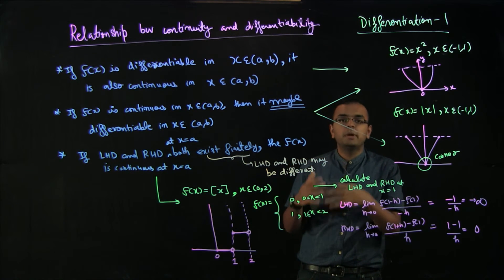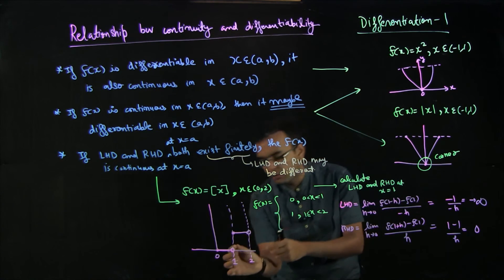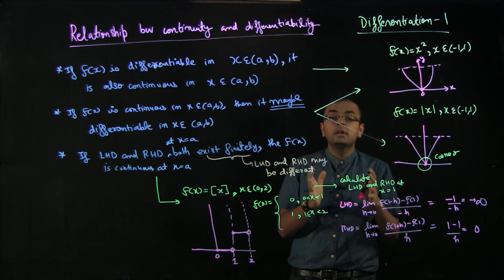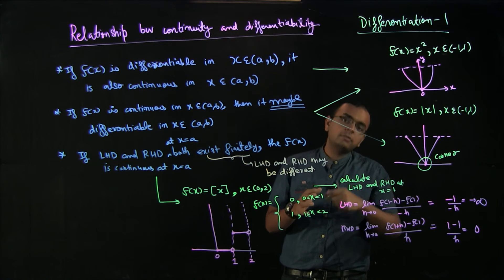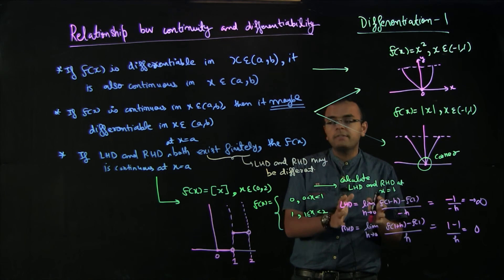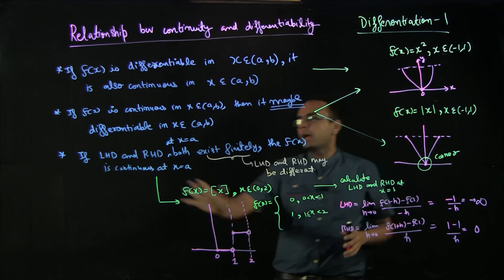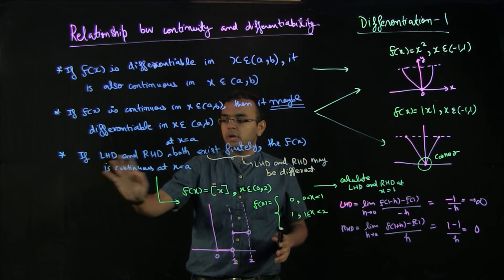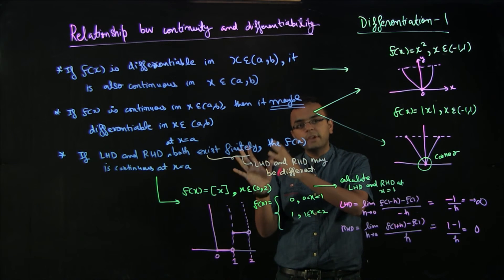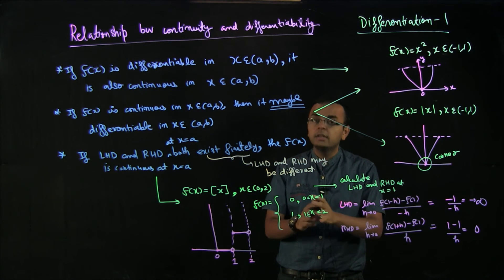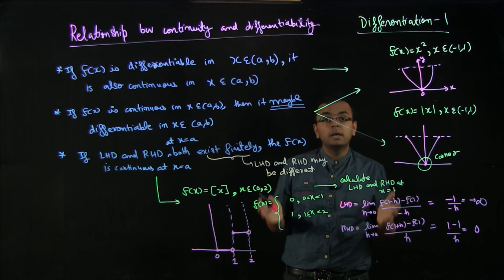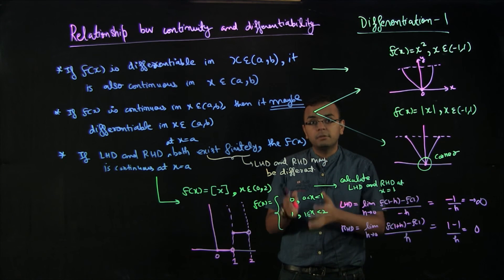Whenever the derivative is finite and you multiply by h, you get only a finite difference between two values. So an infinite derivative ensures a discontinuity, while a finite LHD or RHD means the change in f tends to 0 as h → 0, making the function continuous.